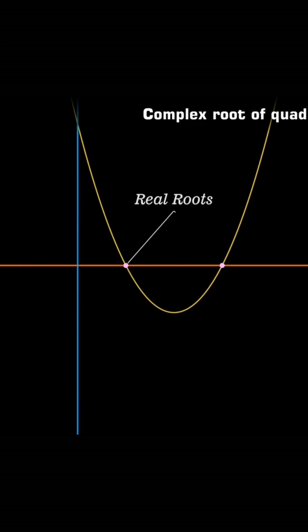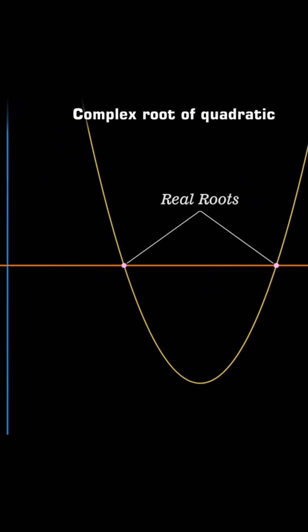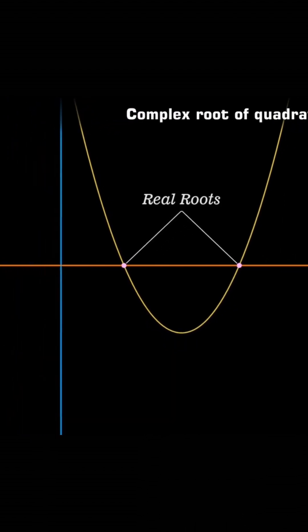If the parabola intersects or touches the axis of x, then it has real roots and the real roots are the point of intersection or the point of contact of the parabola and the x axis.